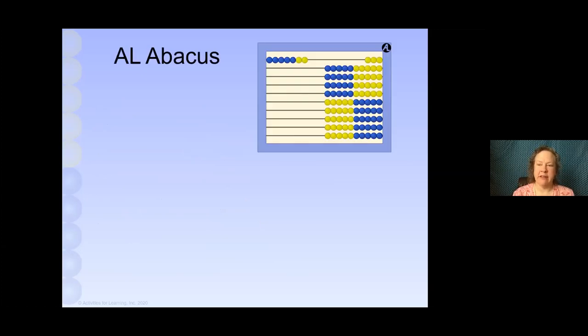Let's look at the Abacus. This is specially designed by Dr. Cotter. It's called the Activities for Learning Abacus. We have 10 rows of beads, 10 beads each, so we have 100 total. They're divided in color after 5 and after 50.